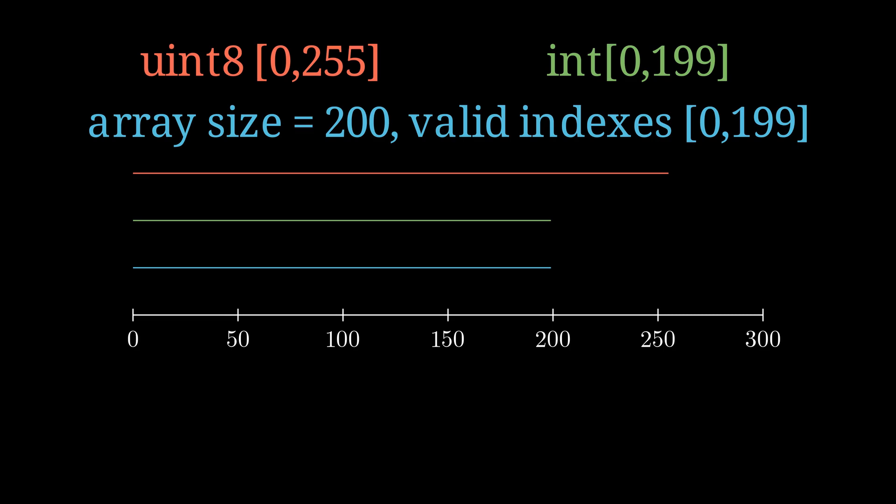Generally, a compiler can't know if an unsigned int 8 runtime value will go above 199, so it can't remove the bound check.